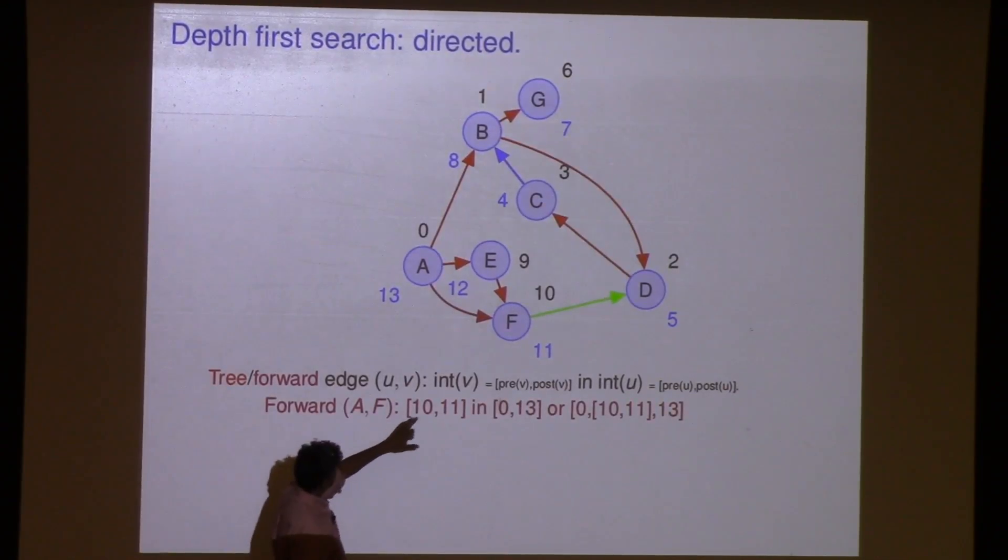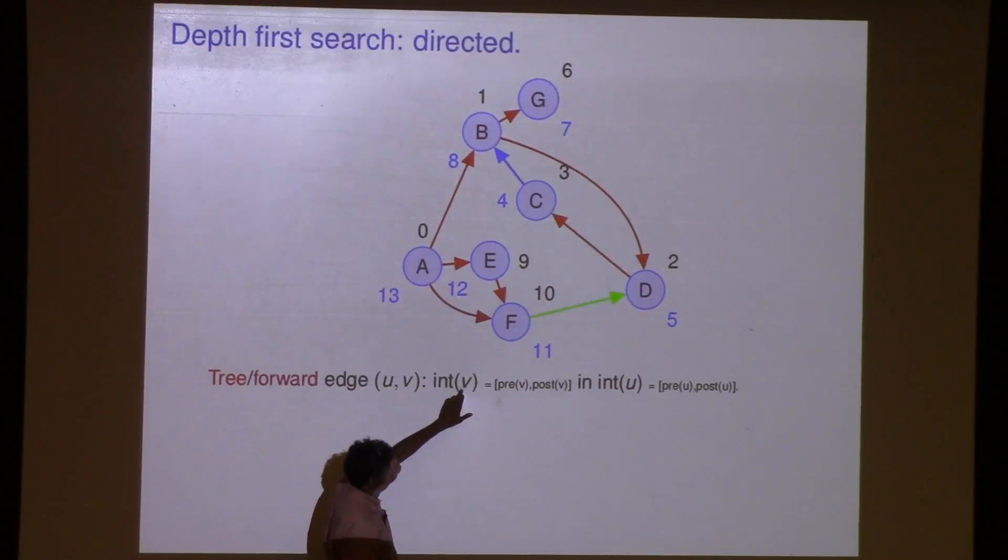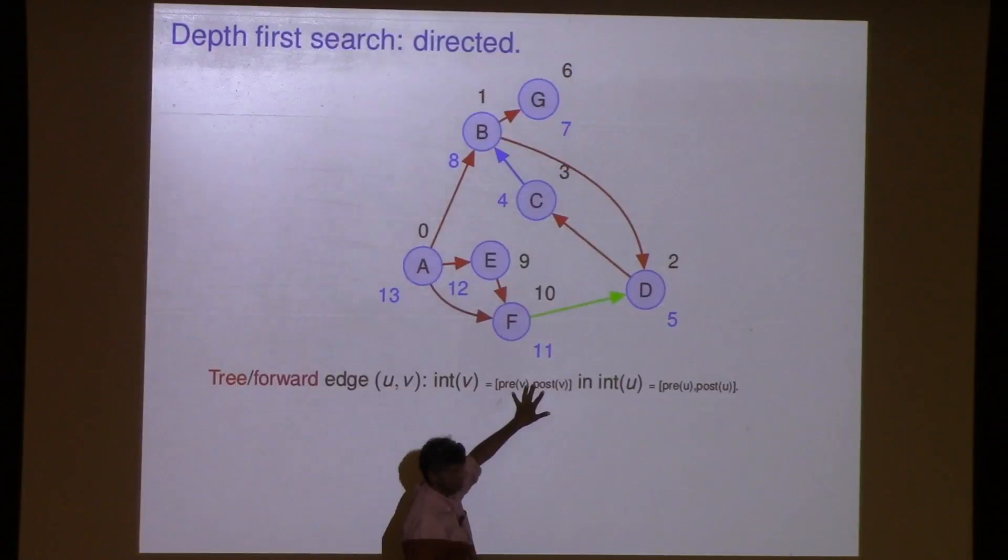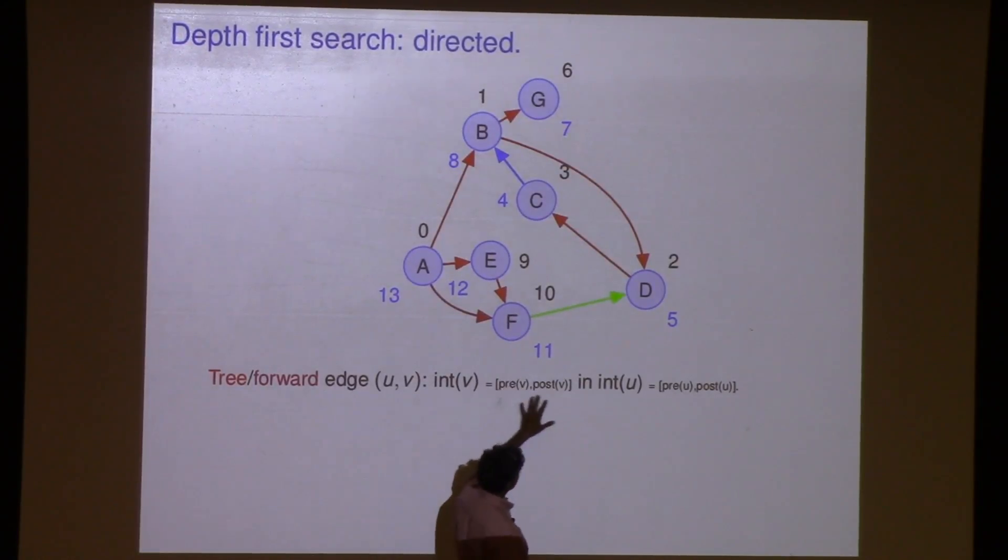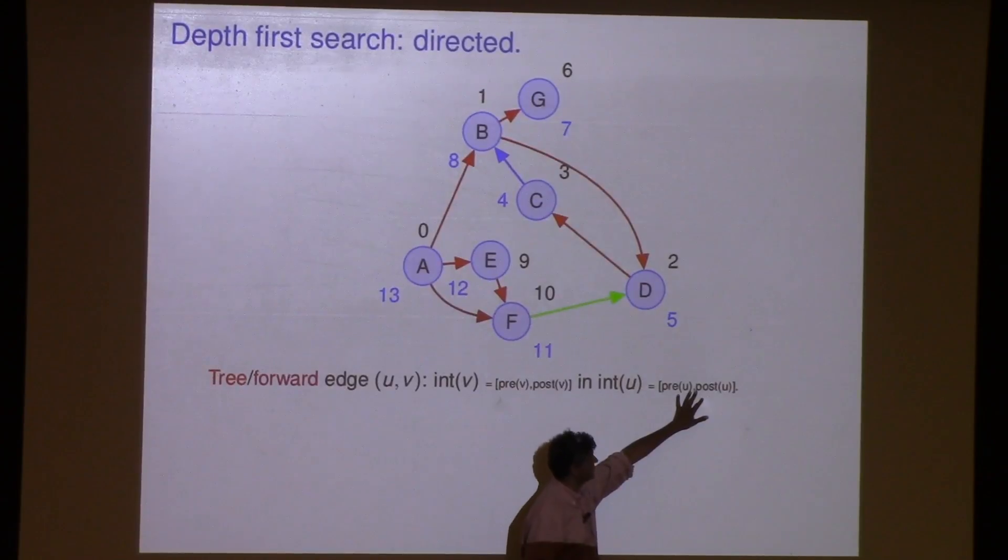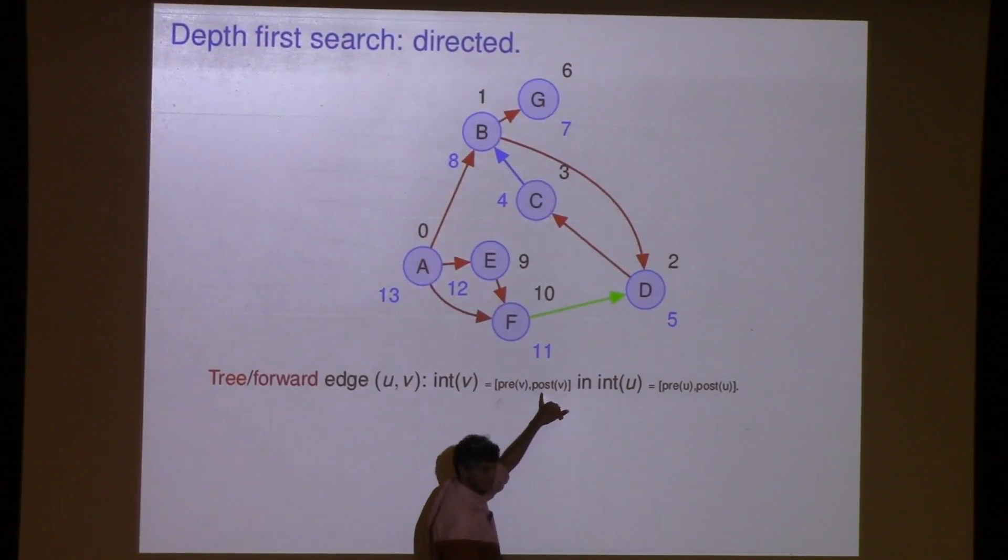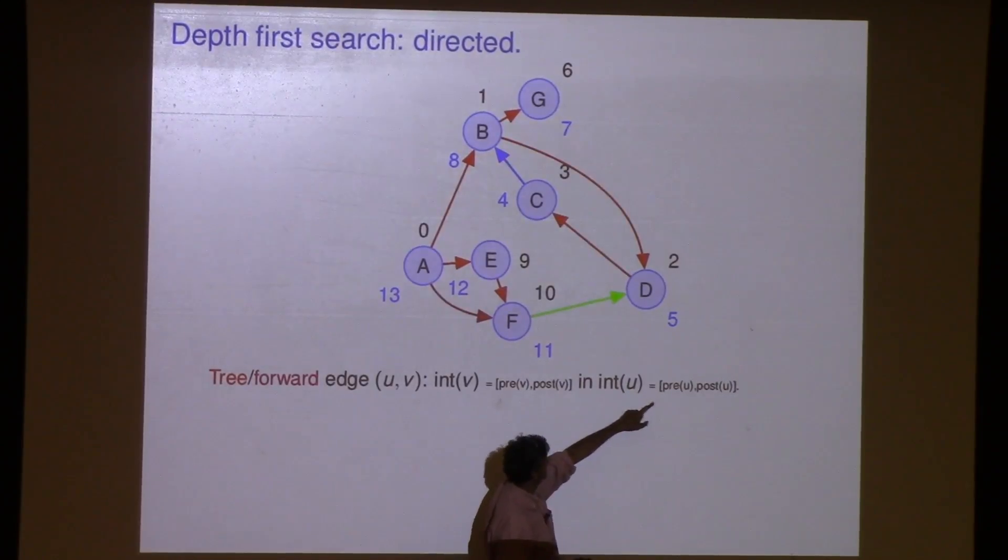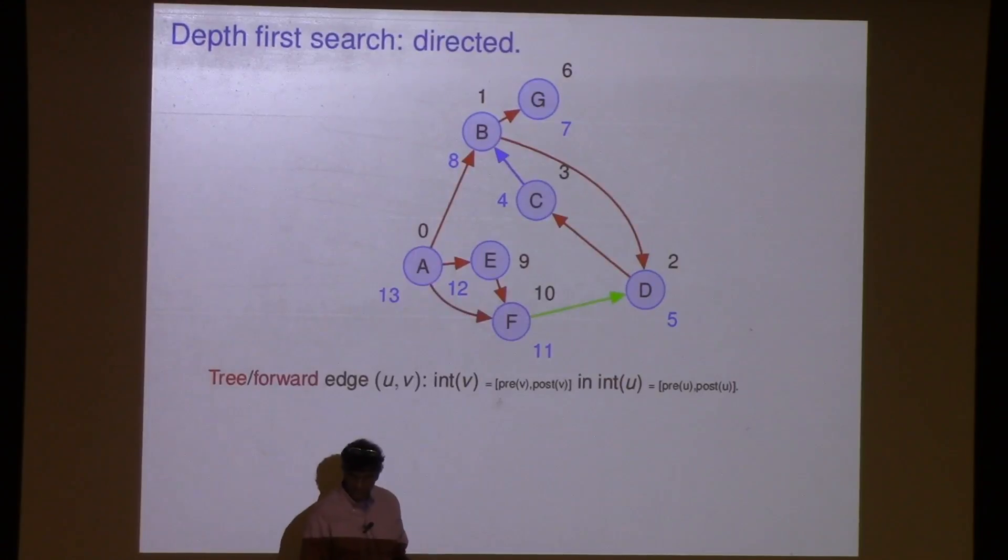And now we can also see a property here. Let's look at a forward edge A, F. Let's look at the interval. These are the intervals of each vertex. And the interval is the pre and the post. That's an interval. And this interval for this vertex is its pre and its post. So when this interval is entirely contained in this interval, what does that mean in terms of the stack? It means this vertex is being explored. When this vertex is being explored, it starts being explored after previous and it ends being explored prior to post. And this is the period during which V is on the stack. It says U is explored while V is on the stack. So that's why it's a forward edge or a descendant edge.